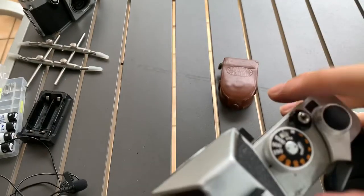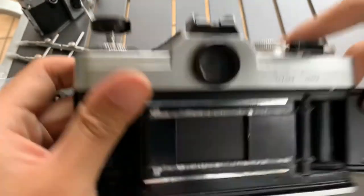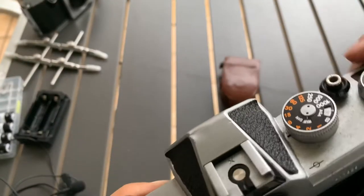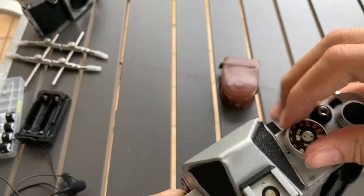One thousand shutter speed, okay. 500. 250. One two five. 60. 30. 15. One over eight. Quarter. Half. One second.